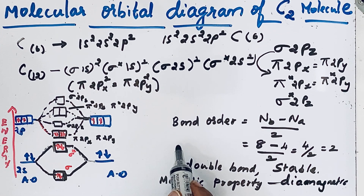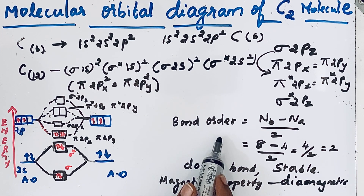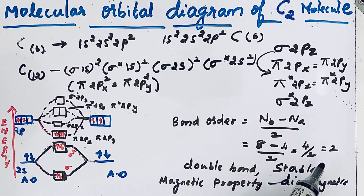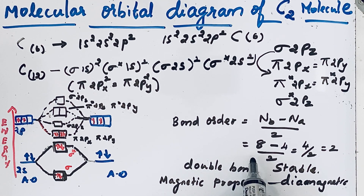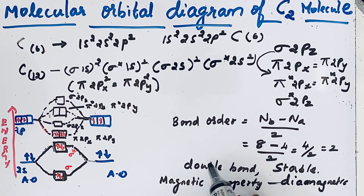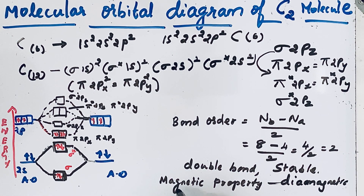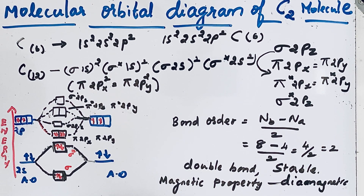In summary, the carbon molecule has a bond order of 2, making it very stable with a double bond between the two carbon atoms. Its magnetic property is diamagnetic. Thanks for watching.